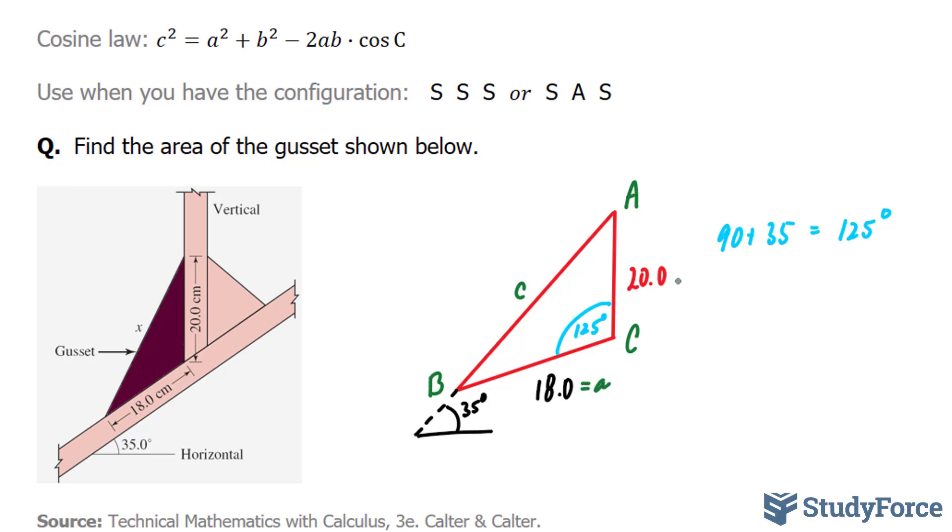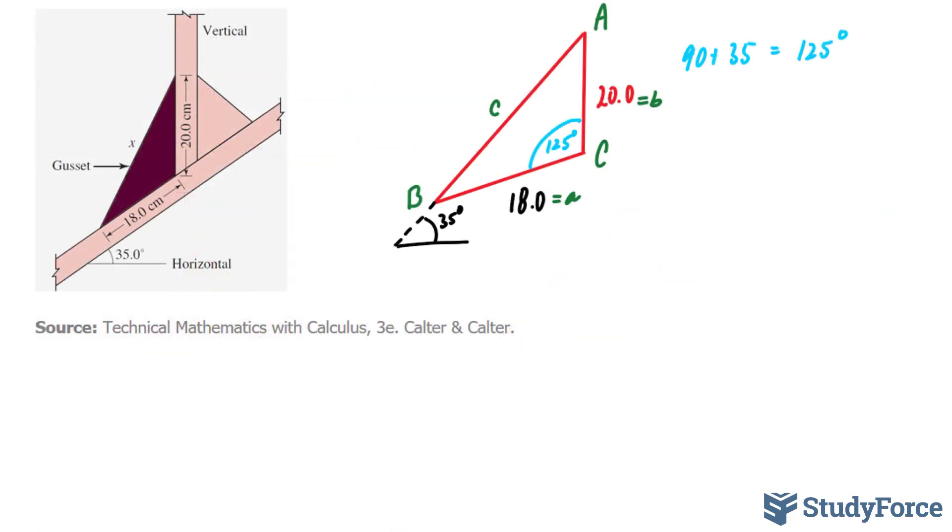Let's substitute everything we know. We know little a, and we know little b. So we have little c is equal to little a squared, plus little b squared, minus 2 times 18 times 20, cosine 125.